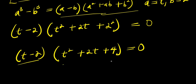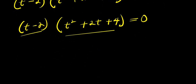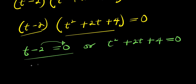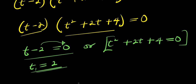So let's equate each of these to 0. We are going to have t minus 2 equals 0, or t squared plus 2t plus 4 equals 0. If t minus 2 equals 0, we simply move this negative 2 over here and we have t equals 2. So this is our t₁. And now we have this quadratic equation to solve for other values of t.